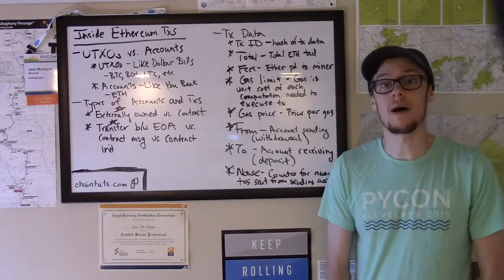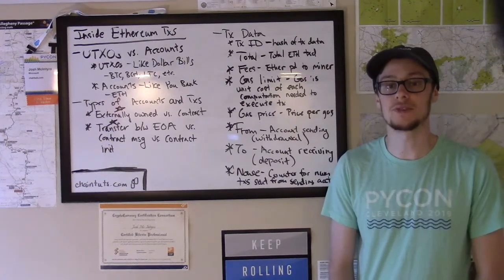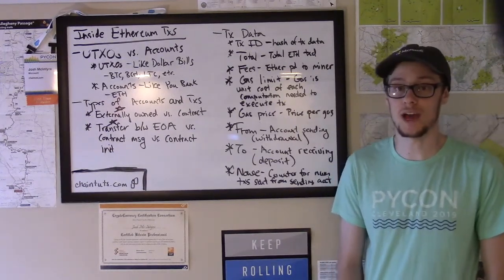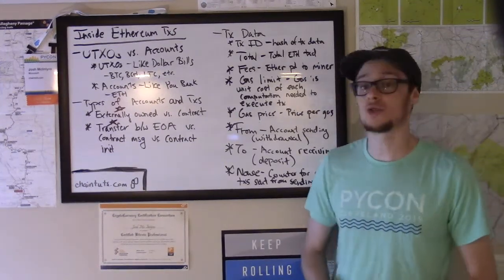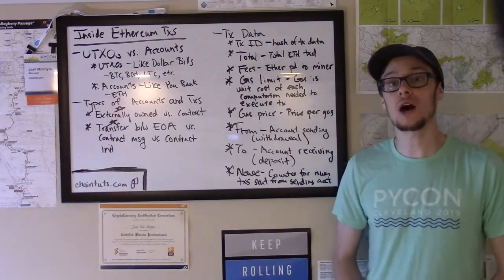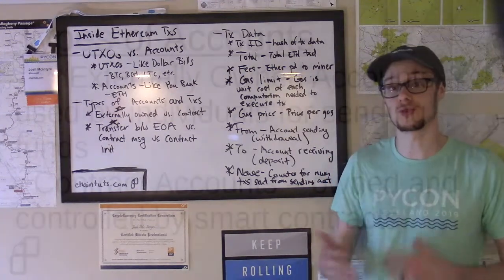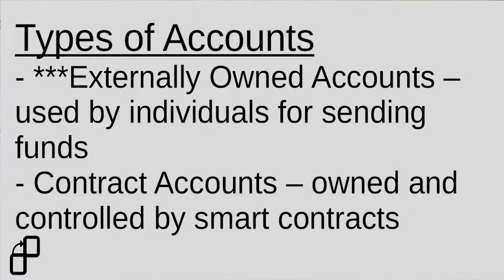Now let's talk about the types of accounts and transactions that occur on the Ethereum blockchain. There are two types of Ethereum accounts. The first is externally owned accounts — this is the type of account you have if you set up an Ethereum wallet and send currency to and from that account. There are also contract owned addresses, which are entirely controlled by smart contract code deployed on the Ethereum network.